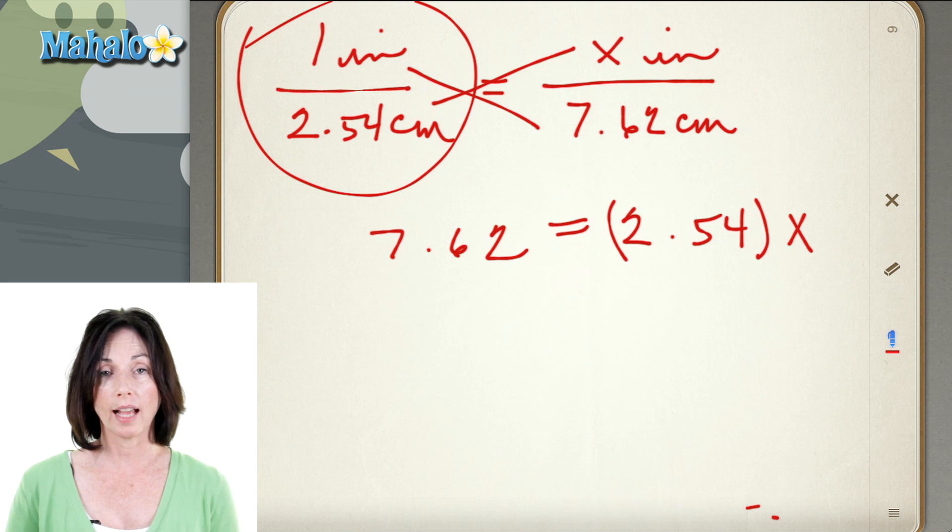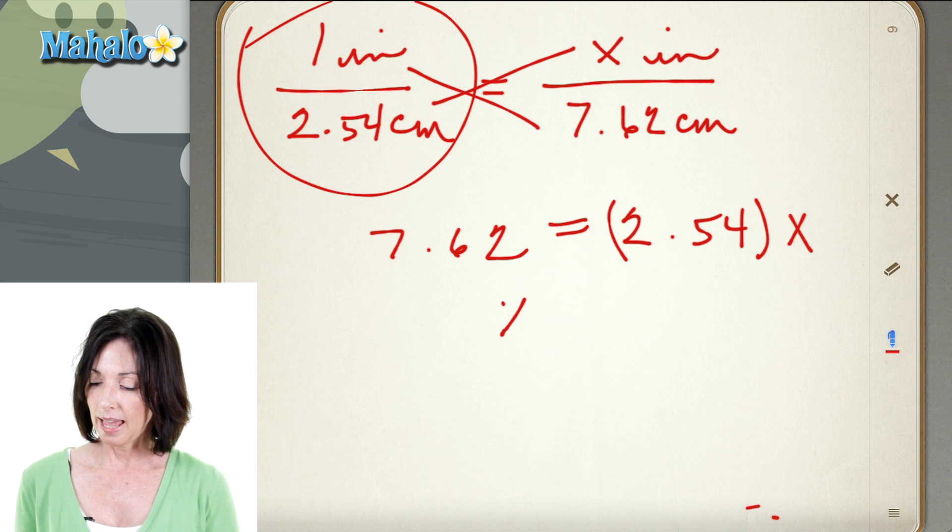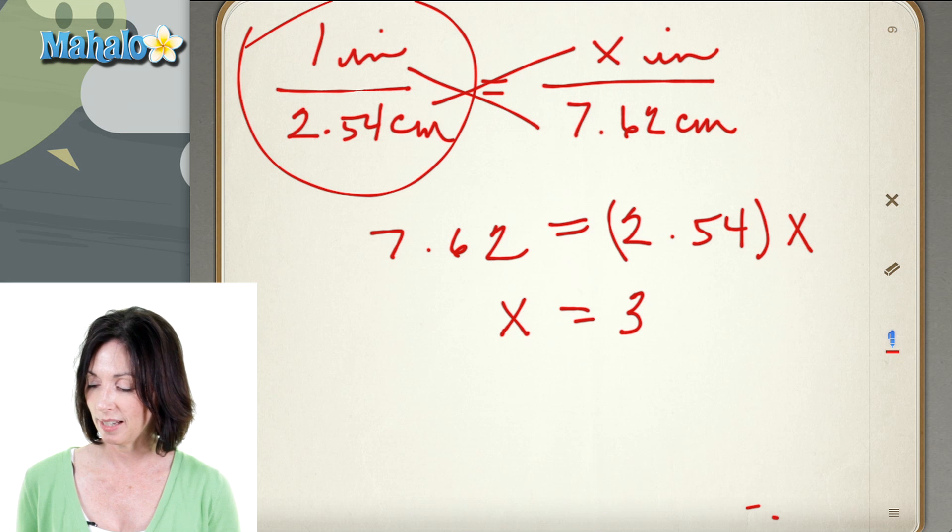So now to solve for x I just divide both sides of the equation by 2.54 and 7.62 divided by 2.54 happens to be 3. So 3 inches.